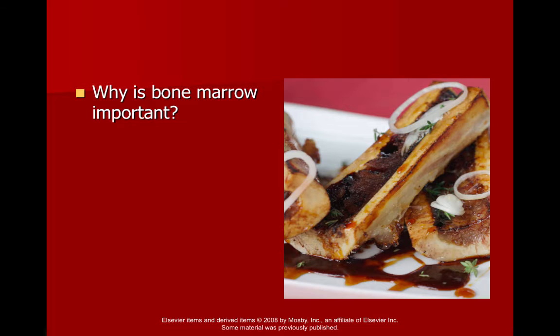The bone marrow is in the middle. If you cross-section a bone, the outer part is called the cortical bone — it's thick, heavy, and very strong. The bone marrow lies in the middle, and surrounding the bone marrow is another type of bone called spongy bone, which is much lighter.